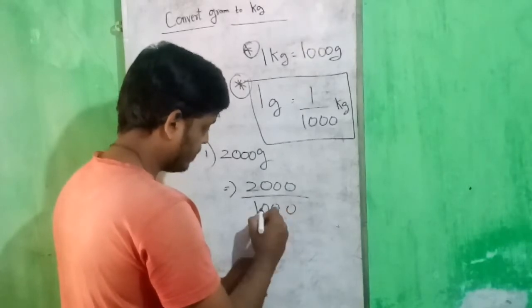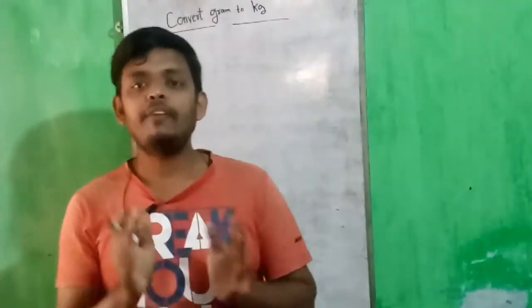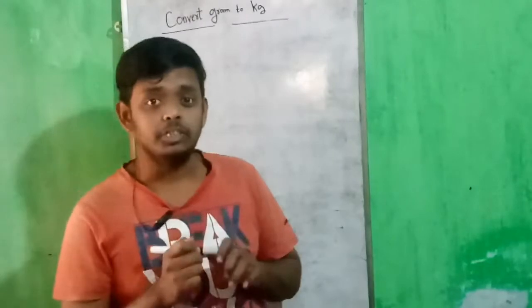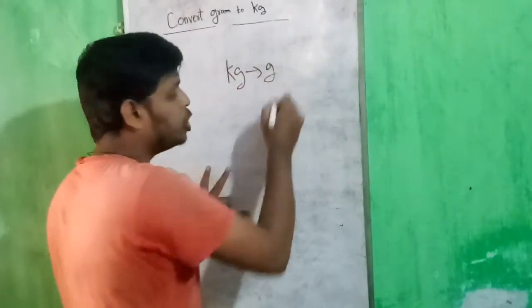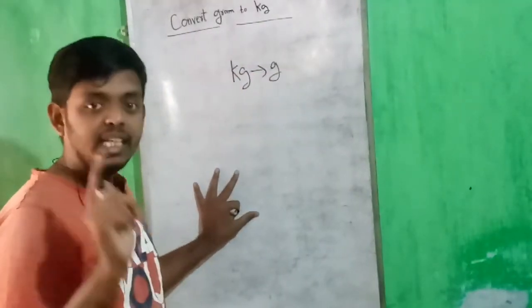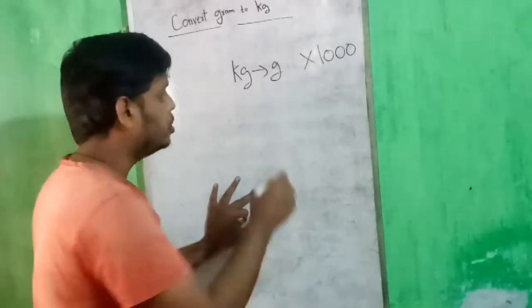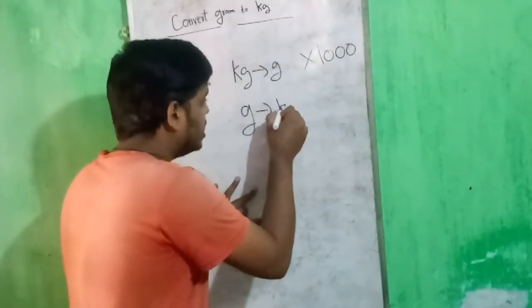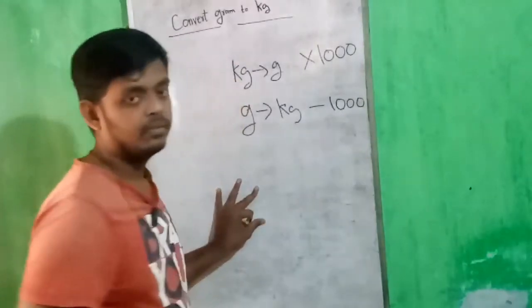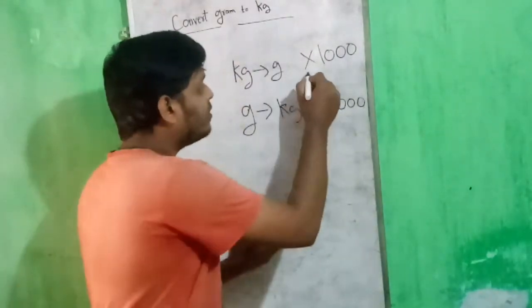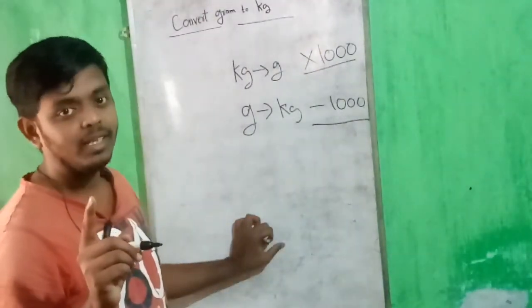One more example: 2000 grams. Divide 2000 by 1000 and we get 2 kg. So remember: to change from kg to gram, multiply the given value by 1000. To change from gram to kg, divide the given value by 1000. When converting into grams, multiply by 1000; when converting into kg, divide by 1000. Remember this — it's very important.